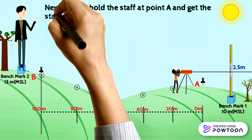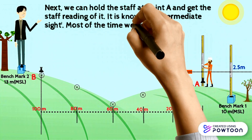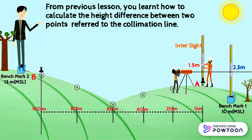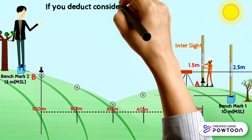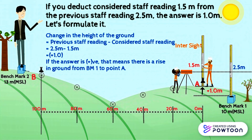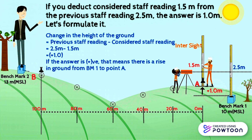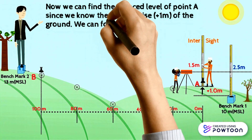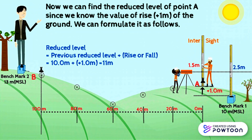Next, we hold the staff at point A and get the staff reading, which is known as intermediate sight or intersight. The intersight value at A is 1.5 meters. The change in height of the ground equals the previous staff reading minus the considered staff reading: 2.5 meters minus 1.5 meters equals plus 1 meter. If the answer is positive, there is a rise in ground from benchmark 1 to point A. The reduced level of point A equals the previous reduced level plus the rise: 10 meters plus 1 meter equals 11 meters.